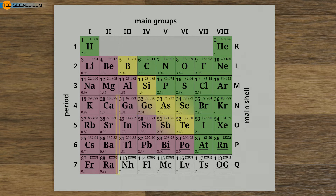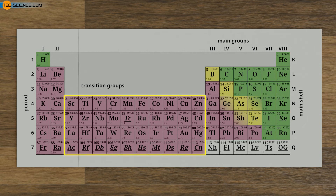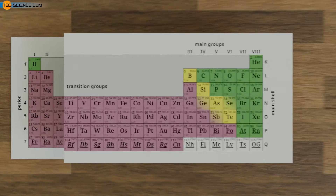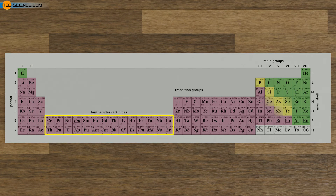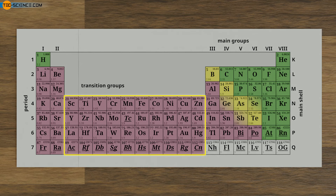Between the second and third main group are the transition group elements, which in the physical sense all belong to the metals. This also applies to the group of lanthanoids and actinoids. Thus, about 80% of all existing elements are metals. Because of their position in the periodic table between the second and third main group, and because they are metals, the transition group elements are also called transition metals. Note that the term transition metal must not be confused with the term semi-metal.